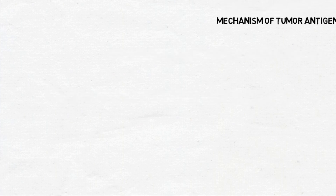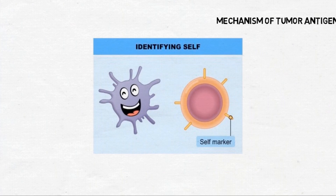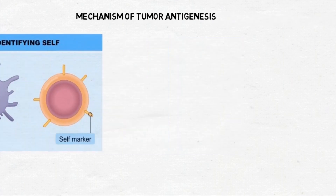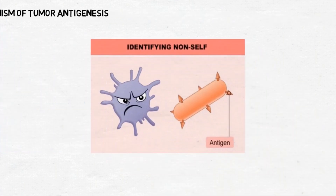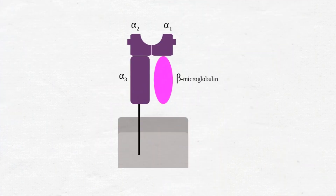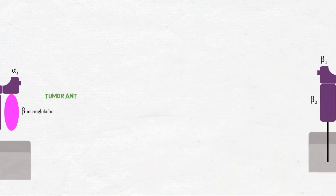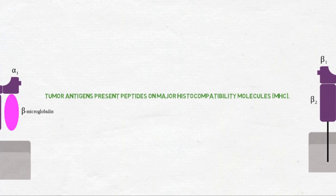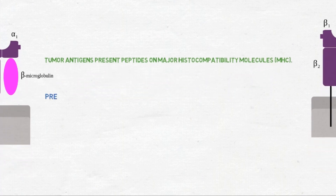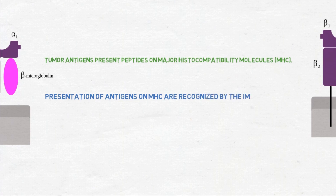Let's see the mechanism of tumor antigenesis. Because of self-tolerance, our immune system does not react to the proteins present on normal cells, as they are already identified as self. In cancer, the proteins present on the tumor trigger an immune response because those proteins have not been previously exposed to the immune system. The proteins on the surface of cancer cells are presented by major histocompatibility molecules.